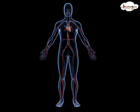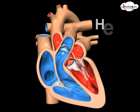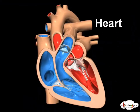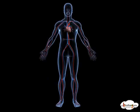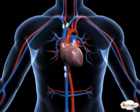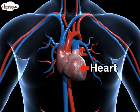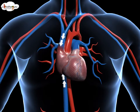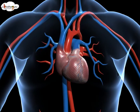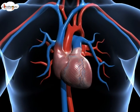The circulatory system comprises blood, blood vessels, and the heart. The heart is the central organ for pumping blood throughout the body, and it is made up of strong cardiac muscles.